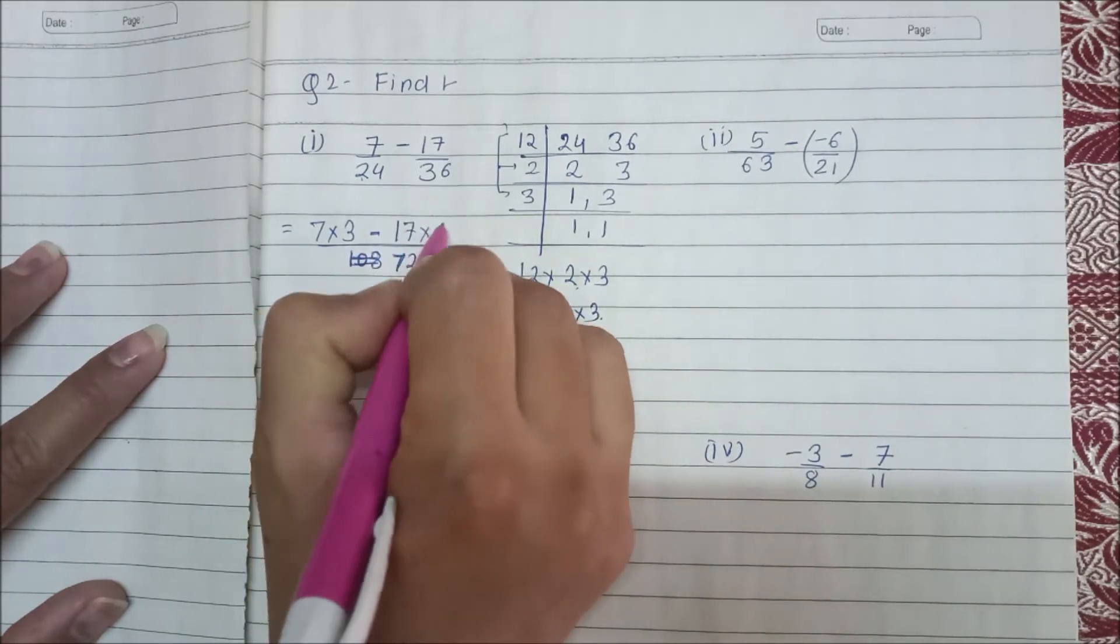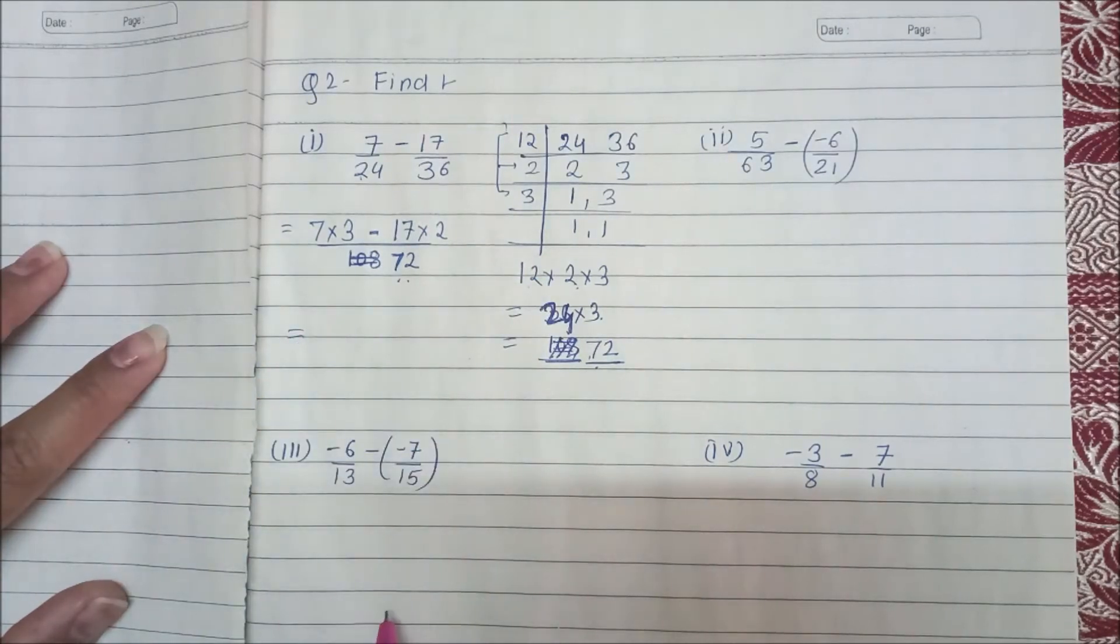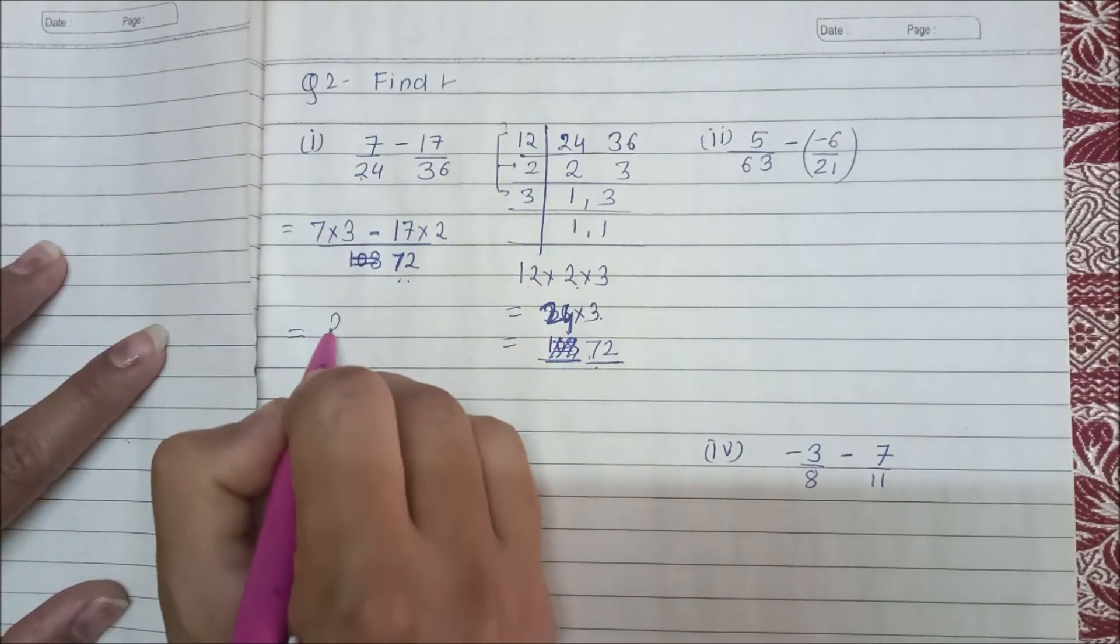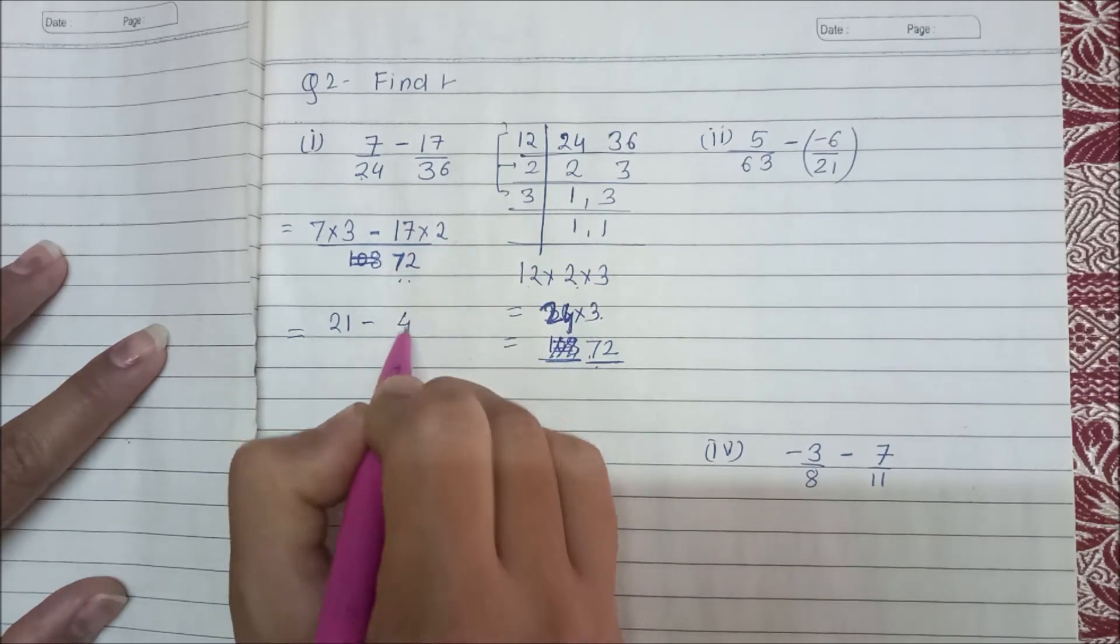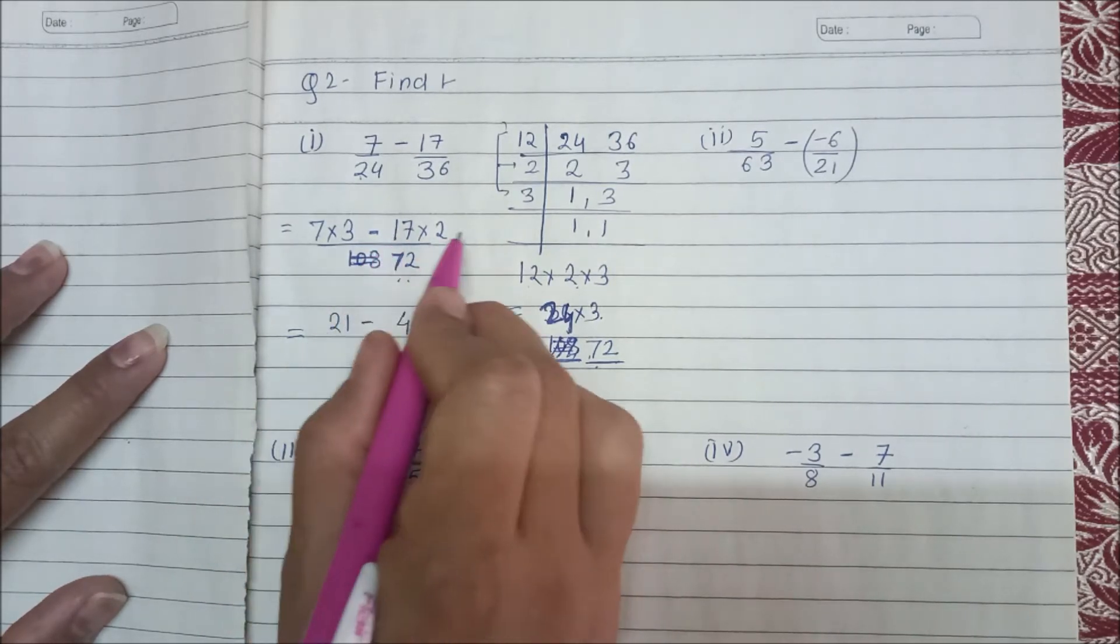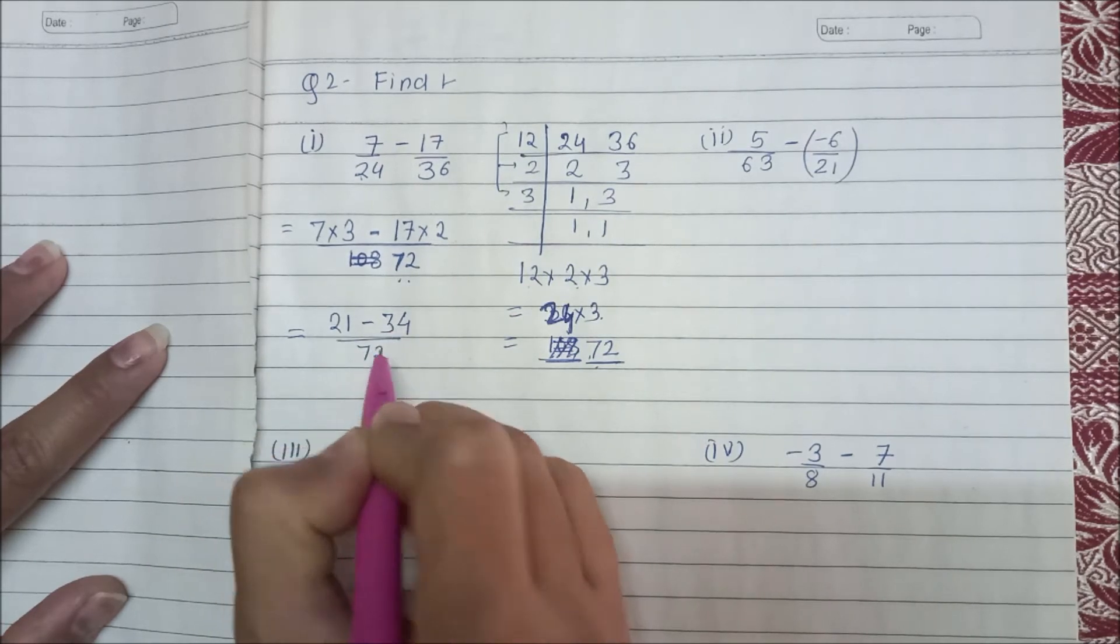Then we will multiply 7 times 3 is 21, minus 17 times 2 is 34. 21 minus 34 is negative 13 upon 72.